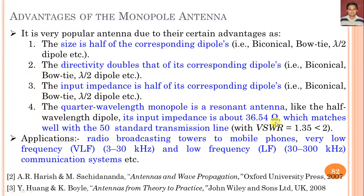The monopole's impedance of ~36.54 Ω matches well with the 50 Ω standard transmission line, giving VSWR ≈ 1.35, which is less than 2. This makes the monopole very useful from radio broadcasting towers to mobile phones, covering VLF applications (30–300 kHz) and vehicle communication systems. By contrast, the dipole antenna has impedance ~73 Ω, which is better matched to the 75 Ω standard transmission line.